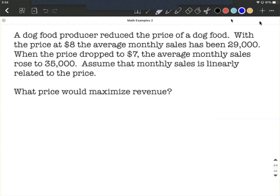In this word problem, we're going to try to maximize revenue. We're given that a dog food producer reduced the price of a dog food. With the price at $8, the average monthly sales is $29,000. When they dropped the price to $7, the average monthly sales rose to $35,000. We're supposed to assume that the monthly sales is linearly related to the price.